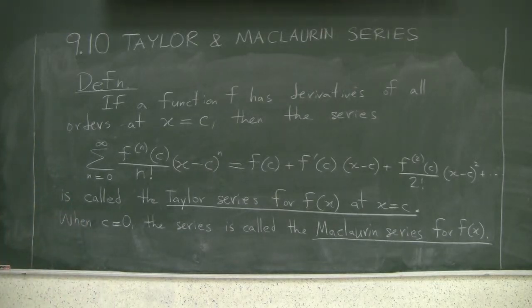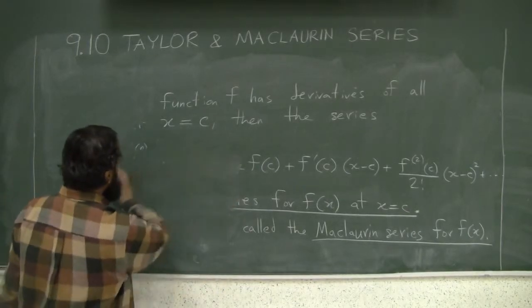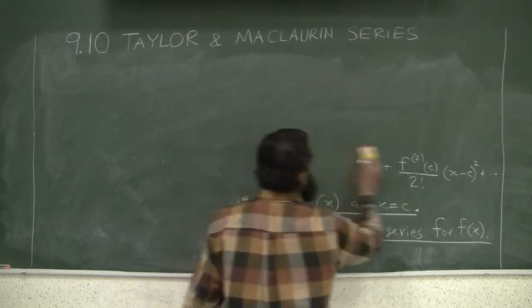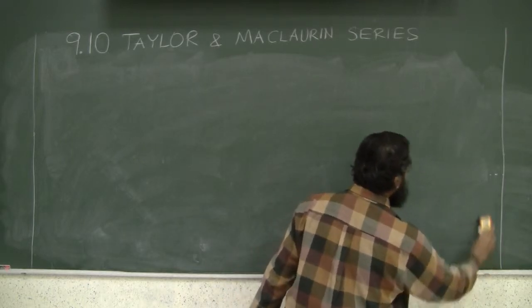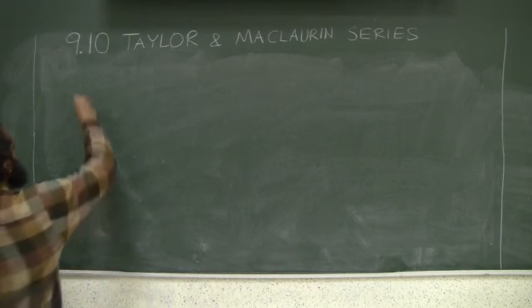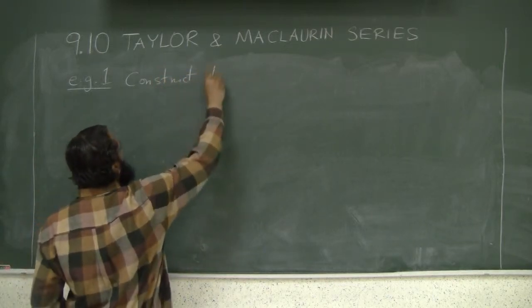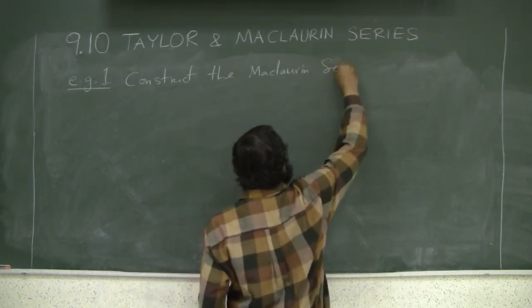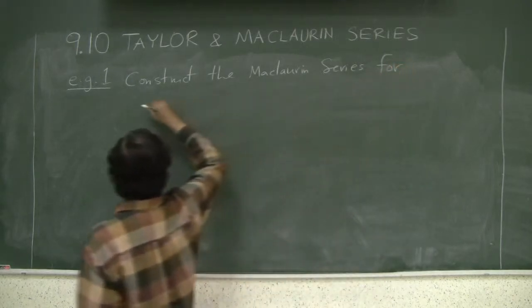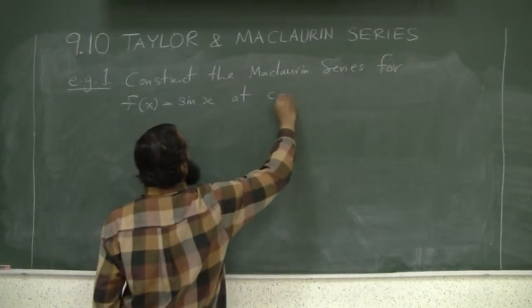Let's see how we will construct one of these series for a function. Let's do an example: find the Maclaurin series for f(x) equals sin(x) at c equals 0.